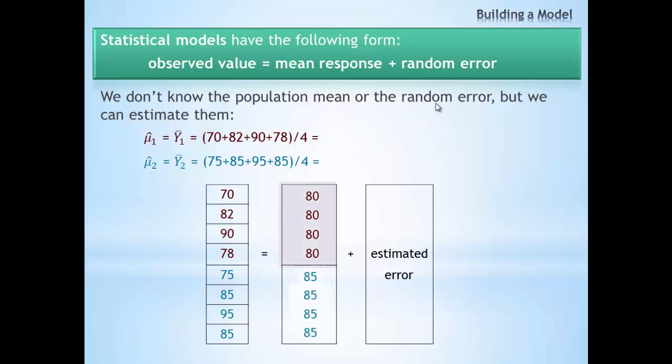The first four observations came from the generic group, which had an estimated mean of 80. The second four came from the brand name group, which had an estimated mean of 85.